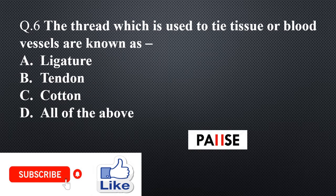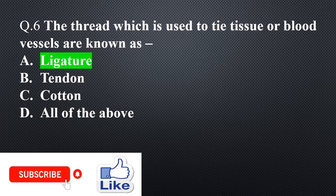Question 6. The thread which is used to tie tissue or blood vessels is known as: Option A: Ligature, Option B: Tendon, Option C: Cotton, Option D: All of the above. The right answer is Option A: Ligature.